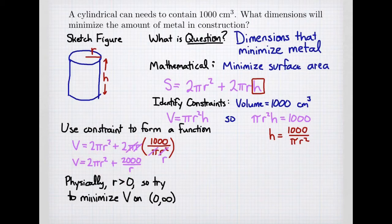Our radius has to be a positive number, so we're going to try to minimize the volume on the interval from 0 to infinity. Notice we don't include 0 because 0 in the radius would violate our restriction that we have 1,000 cubic centimeters in the volume.